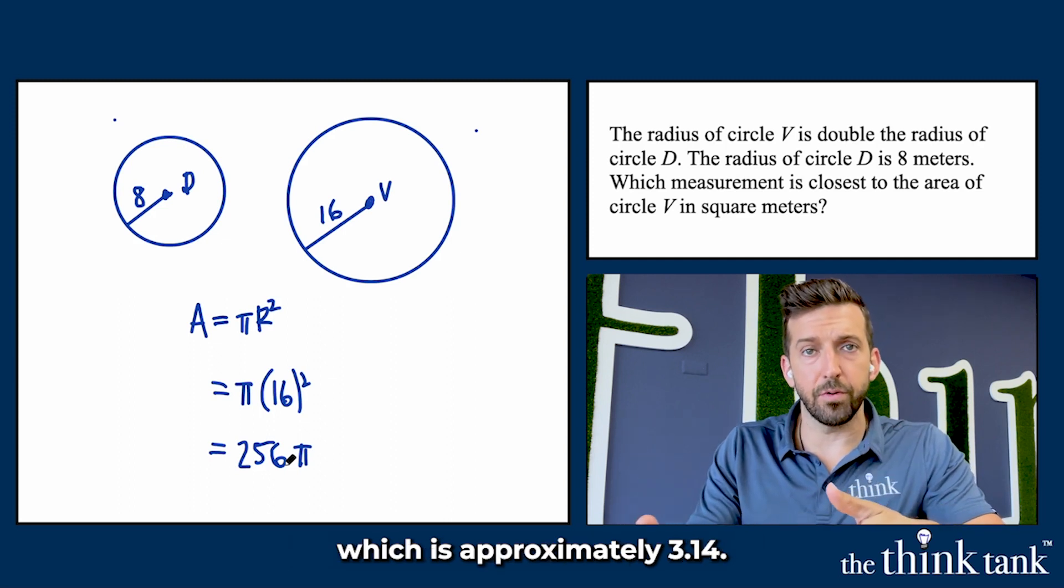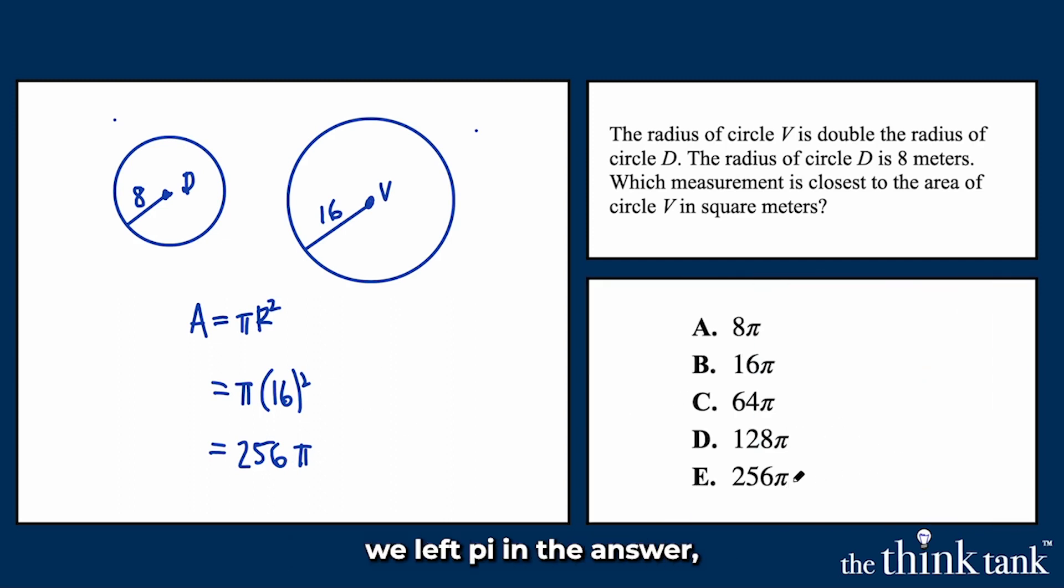But in this problem we left pi in the answer, which is kind of customary with circles—that's a typical move. We can see here that our area is therefore 256 pi. And if you got that answer, that's great thinking.